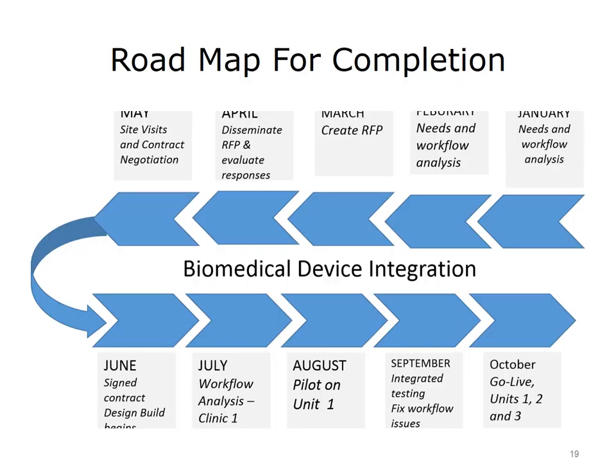In this slide, we see a month-by-month report of how the project will be implemented. This view allows both the stakeholder and the IT department to have a shared understanding of what will happen each month. You will note many dependencies early in the project. For instance, workflow analysis in January and February directly impacts the technical and human resource requirements that populate the RFP. The RFP responses will be evaluated by the same team that was involved in the needs and workflow analysis later in April.